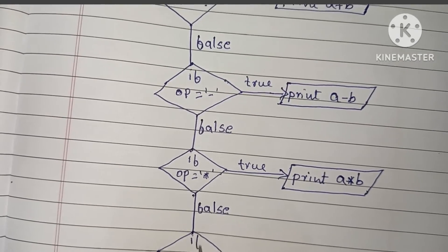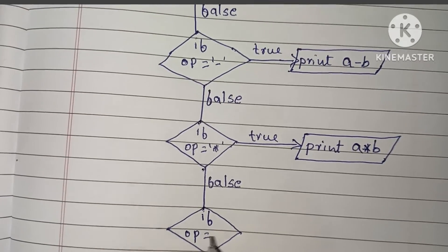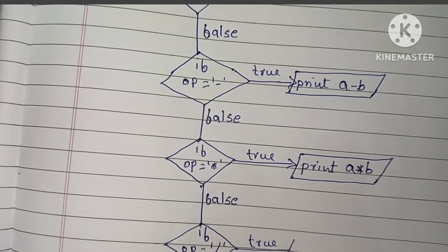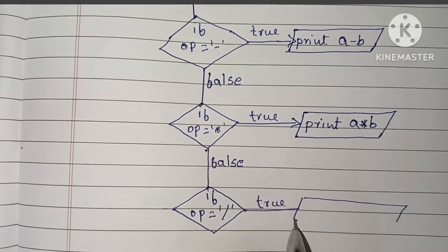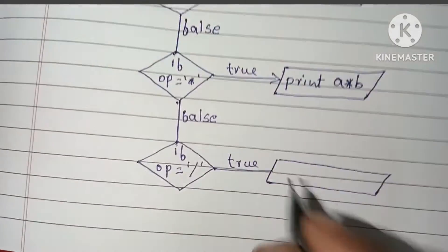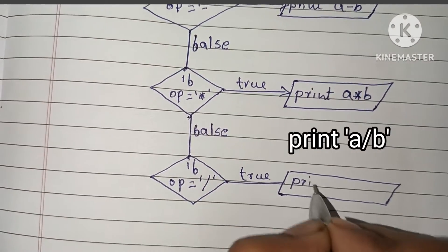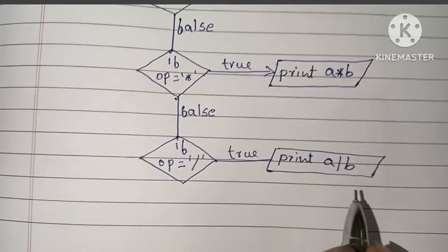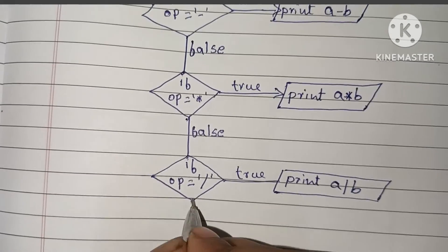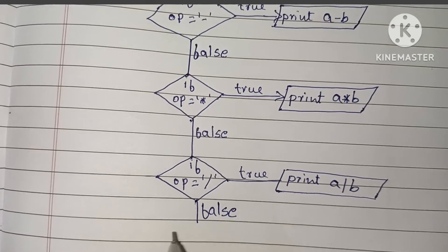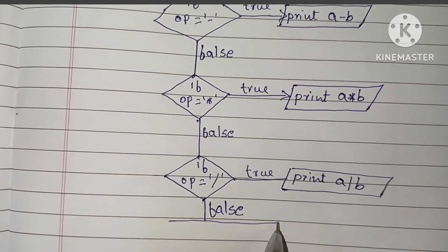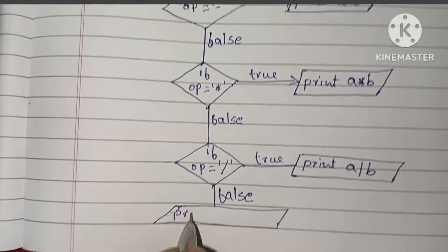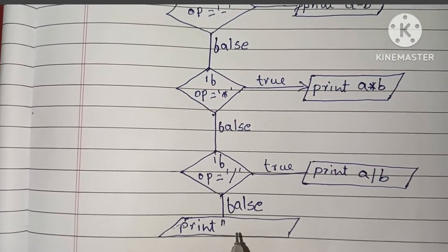If the multiplication condition is false, we check for division: if op is equal to division. If this condition is true, we print a divided by b. If this condition is false, we print an error — meaning the input was not a valid operation choice.